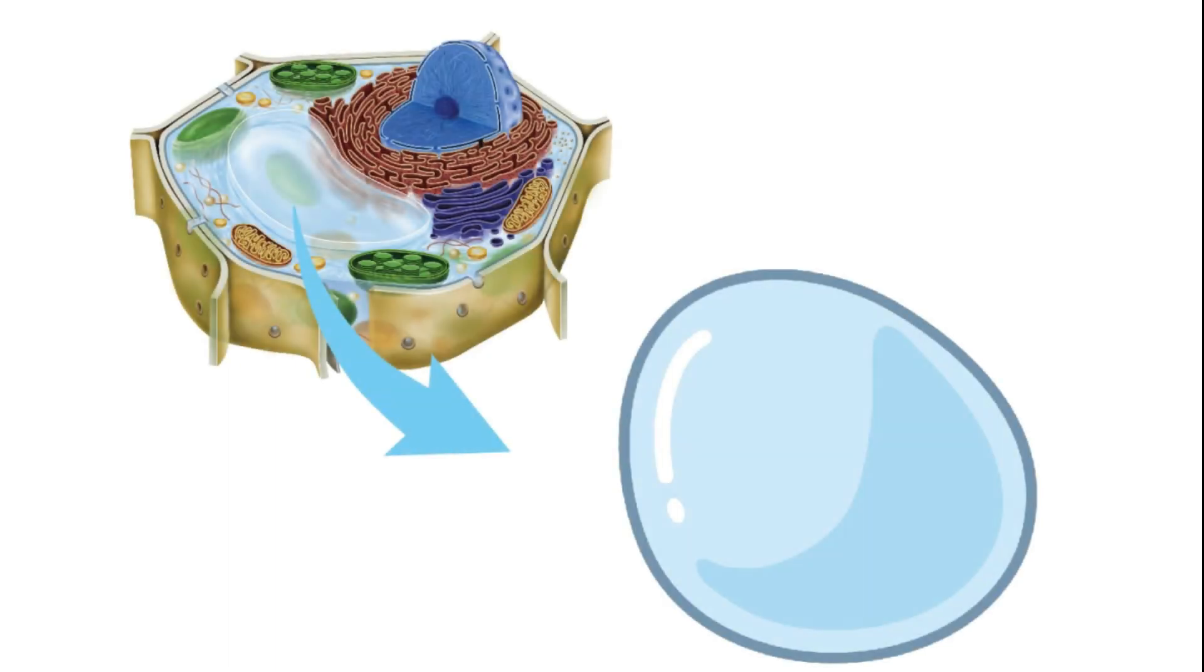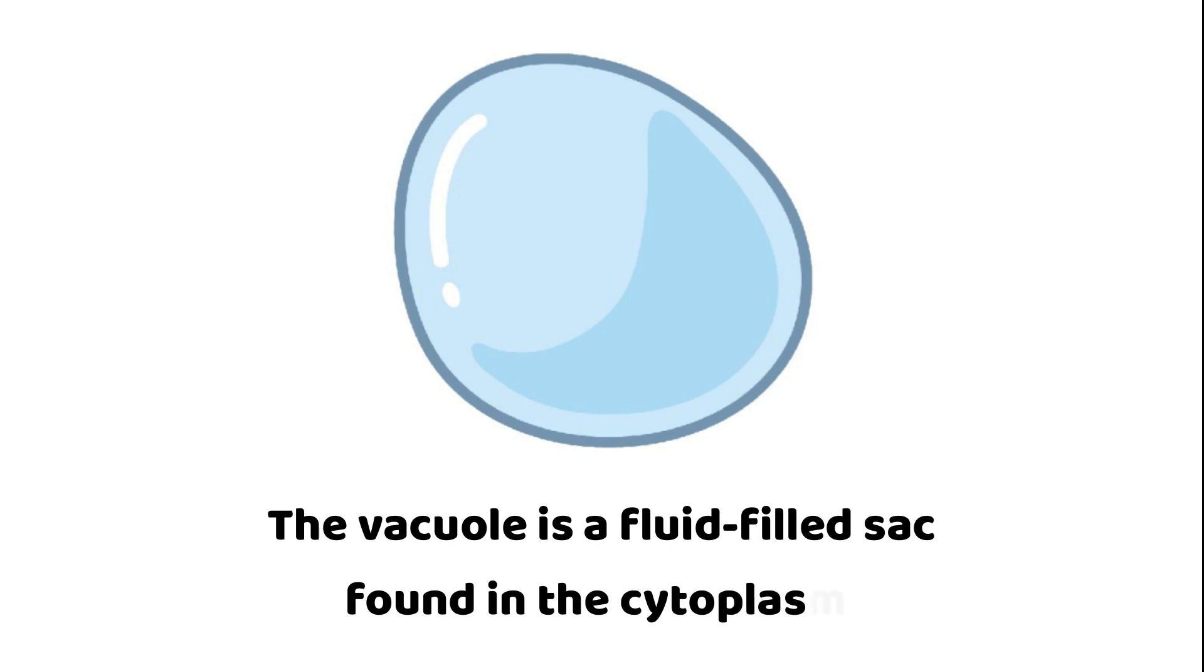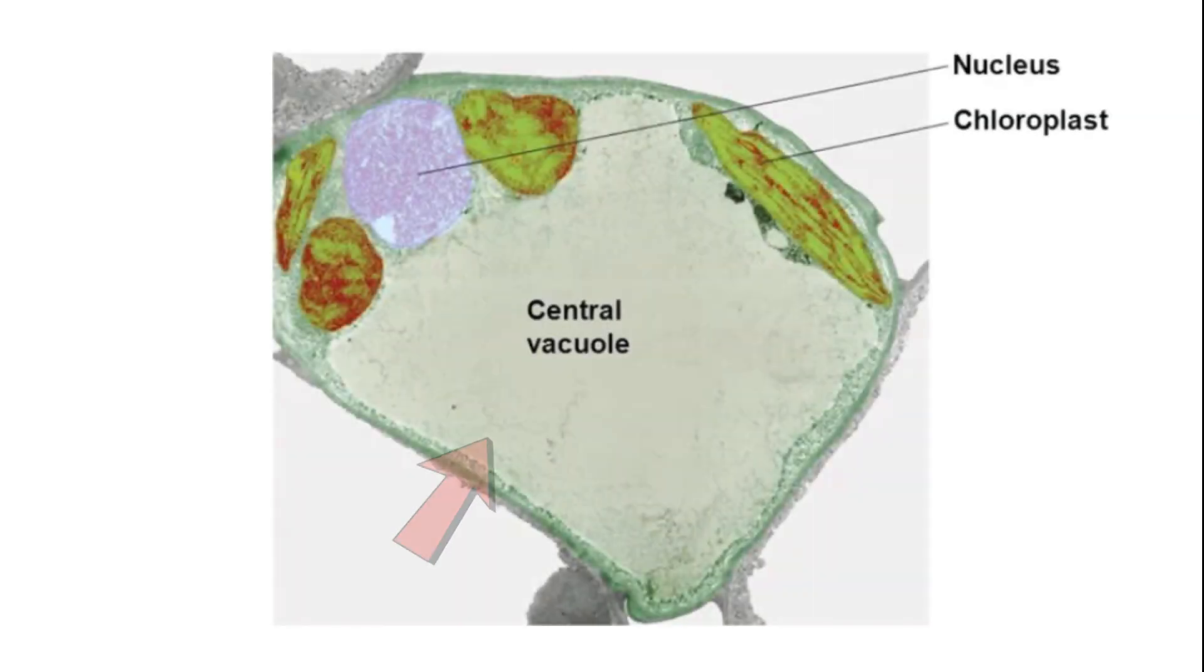At first glance the vacuole might seem like a humble, unassuming organelle, but appearances can be deceiving. The vacuole is a fluid-filled sac found in the cytoplasm. In plant cells it is often the largest and most prominent organelle, occupying a significant portion of the cell's volume.